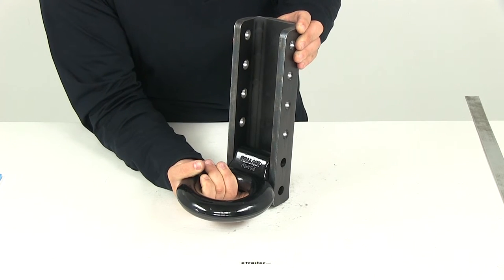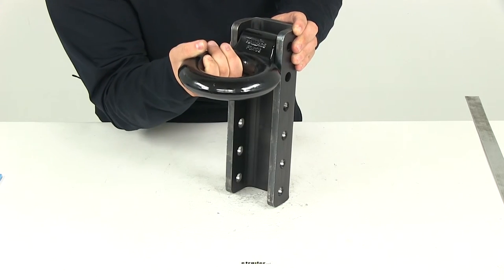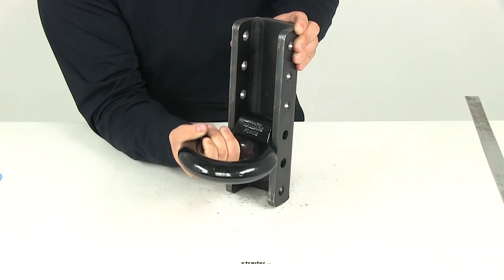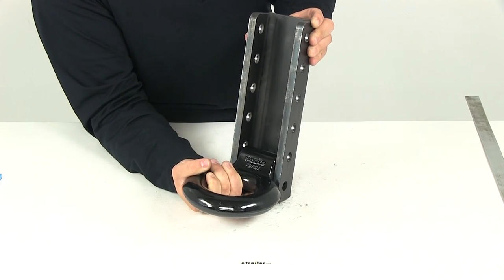That's one of the really neat things about the adjustable channel bracket is you can change the height of your ball coupler, your lunette ring, or your clevis to fit your application.